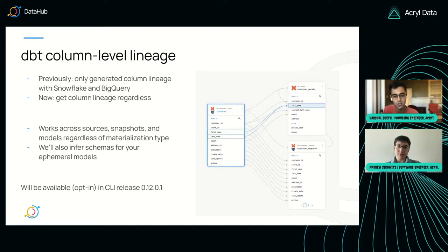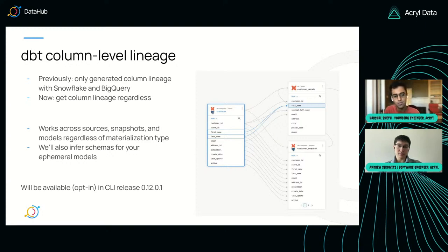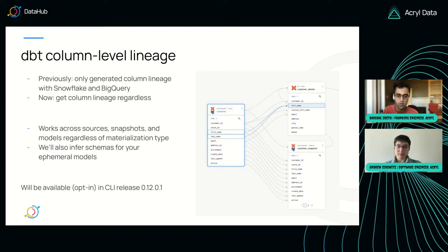One extra goody as part of that: if you have ephemeral tables with dbt, because they didn't actually exist in the underlying warehouse — say Snowflake — the entity for that dbt model in DataHub would just look blank. Now we'll actually infer what the columns of that ephemeral model are and what their data types are. We'll show that best-guess inferred schema in DataHub, so you can actually start to understand exactly what is going on with your dbt models, not just the things that are materialized within your underlying warehouse.